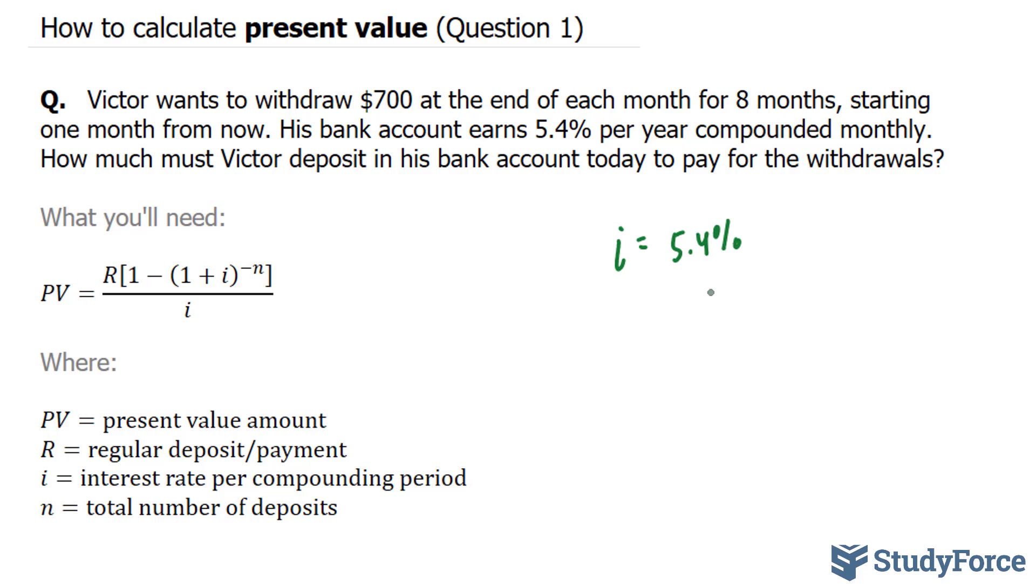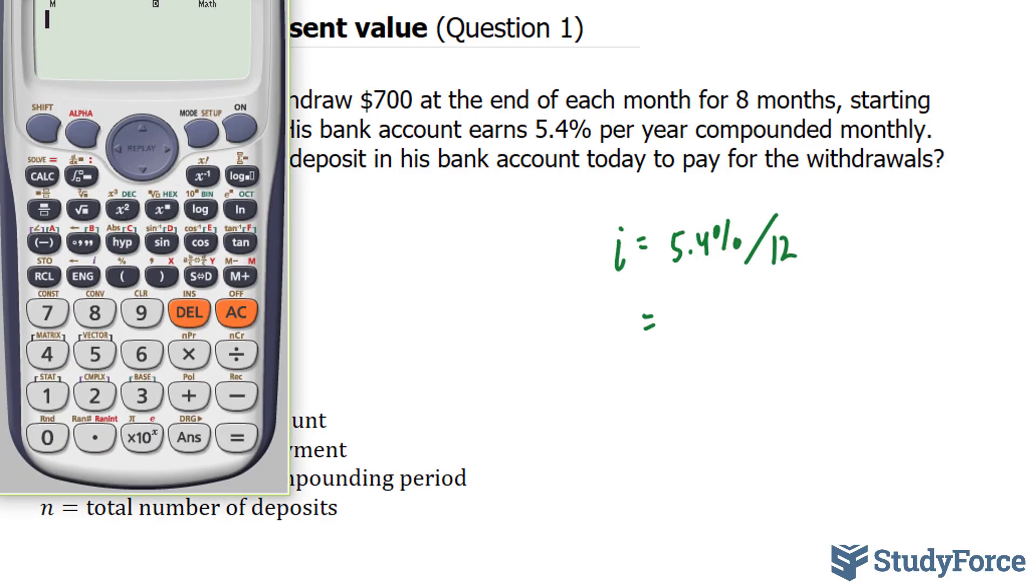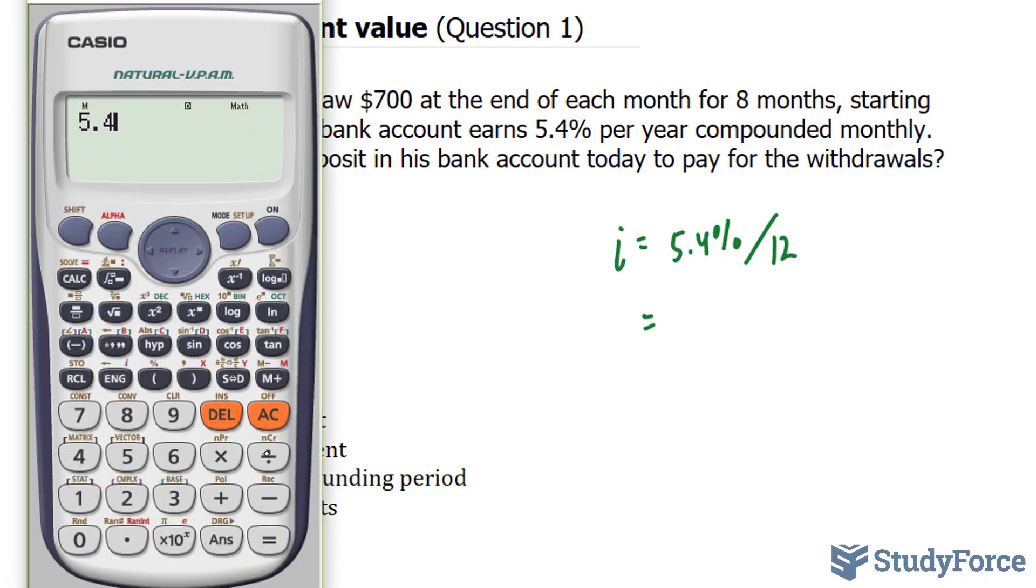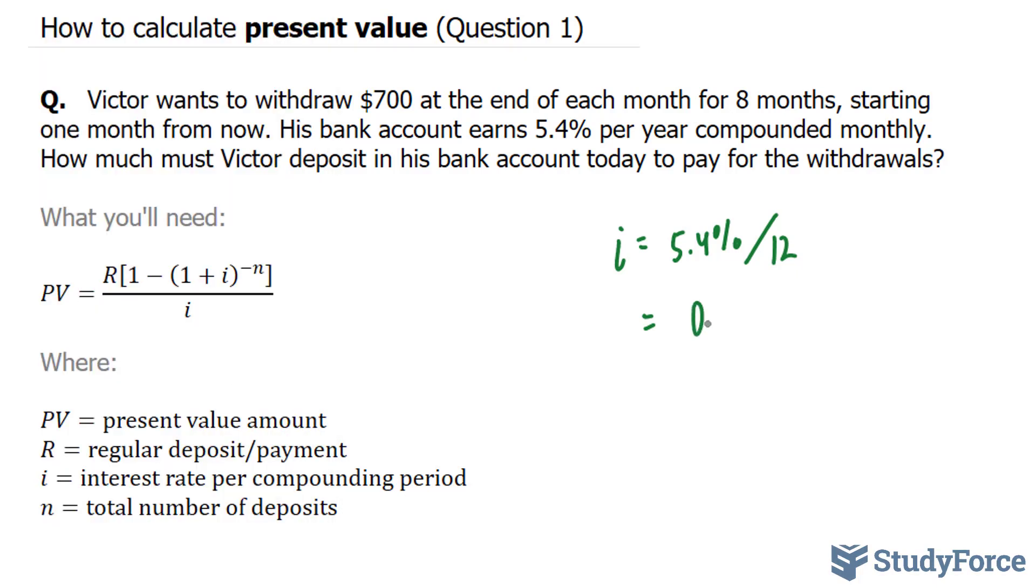And of course, that percent is per year. Now since it's being compounded monthly, we have to divide that by 12. And if we divide that by 12 using our calculator, 5.4 divided by 12 gives us 0.45. Now that's a percentage, 0.45% per month.